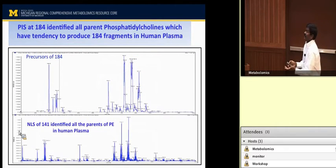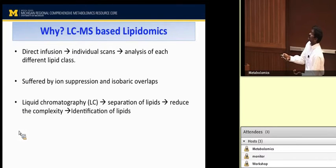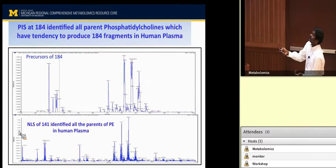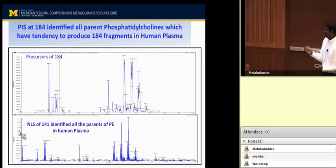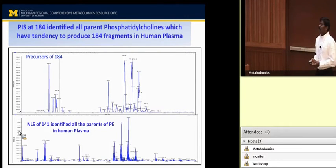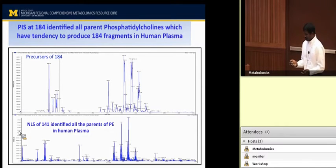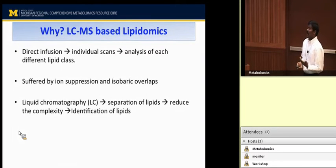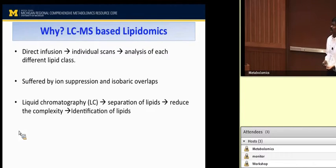As shown earlier, performing a precursor ion scan at 184 in direct infusion identifies all parents of 184, which you then input into the database to extract only phosphocholine lipids. Similarly, performing a neutral loss scan at 141 identifies all parents of phosphatidylethanolamine in human plasma. However, the direct infusion approach is limited because individual scans are required for the analysis of different lipid classes, and it also suffers from ion suppression and isobaric overlaps.